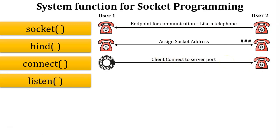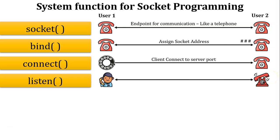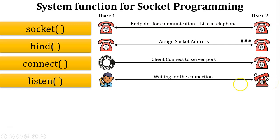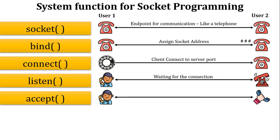The next function is listen. Whenever user 1 is calling user 2, user 2 listens to the incoming telephone ring. Using the listen function, the server waits for an incoming connection. The next function is accept — whenever user 2 picks up the receiver, it means they accept the call. The accept function means the server accepts the connection.